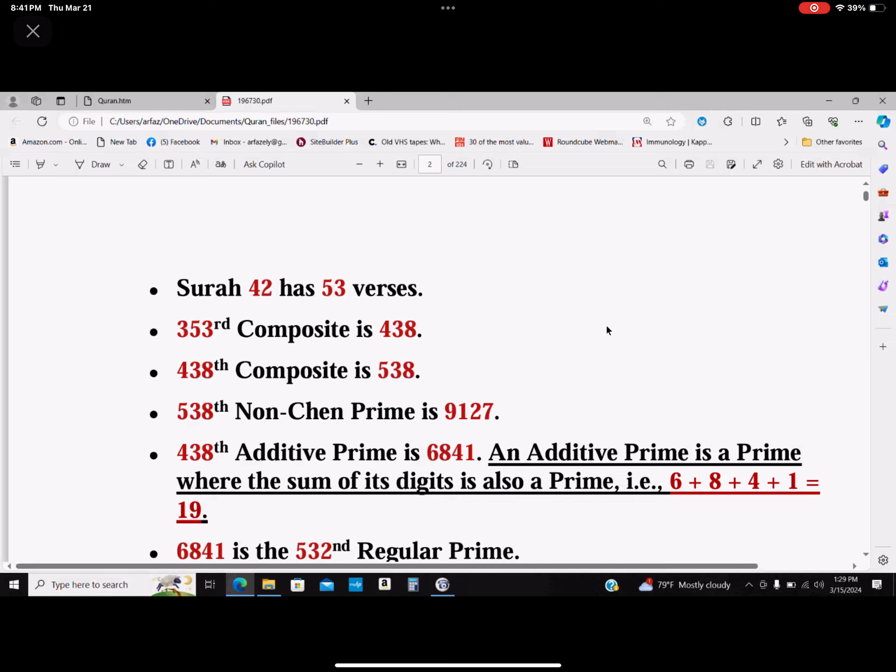You see, this 438 generates a prime number which is actually an additive prime, but more importantly, the sum of the digits adds up to a prime number which is 19. So there is some beacon here telling us look at this more carefully. That's what we're going to do.